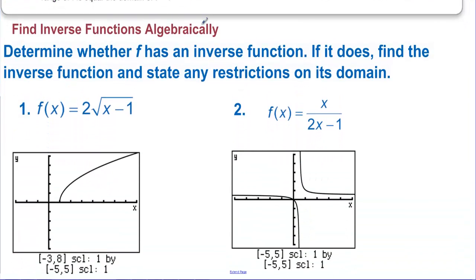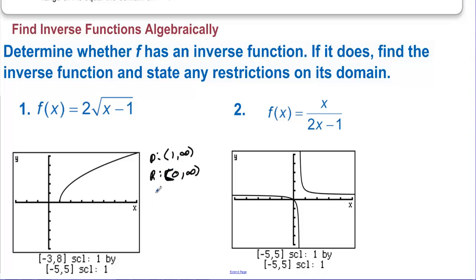Find inverse functions algebraically. Determine whether f has an inverse function; if it does, find the inverse function and state any restrictions on its domain. Here's our first function — it is a square root function. Here it is graphed on a graphing calculator. Its domain is [1, infinity) and its range is [0, infinity), because if you plug in 1, you get 0.